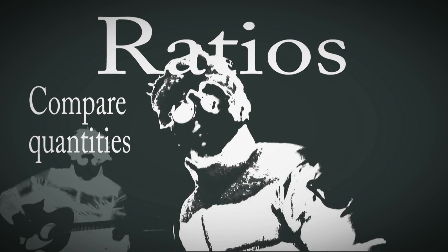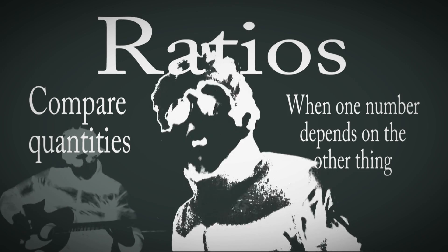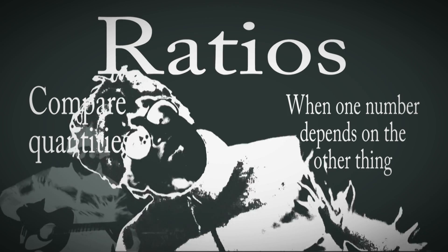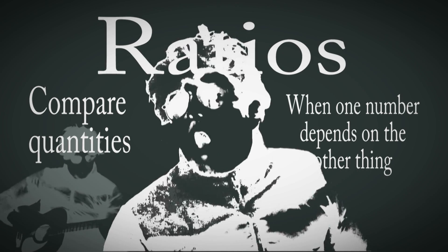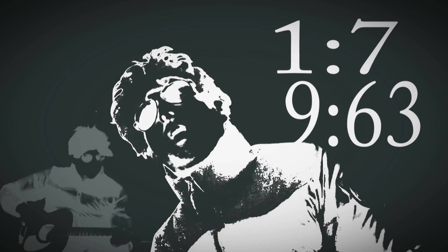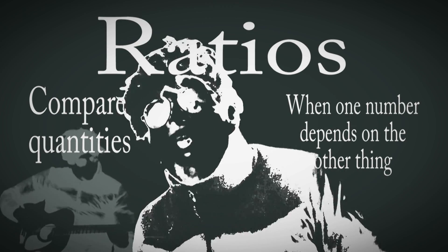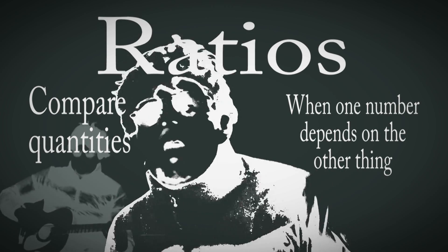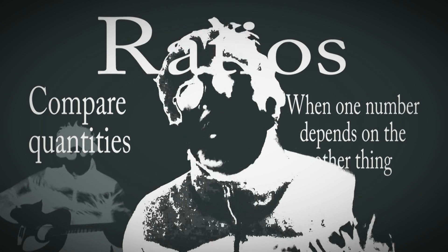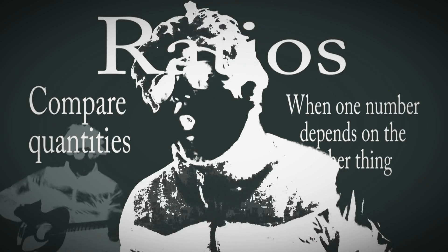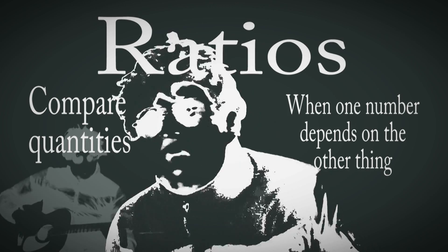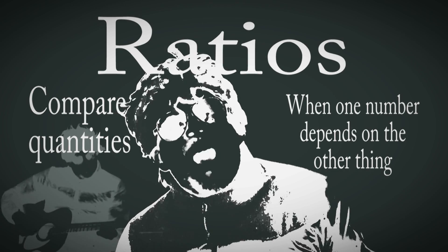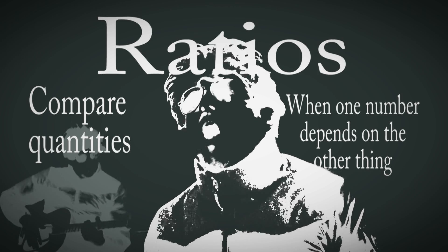Compare quantities when one number depends on the other thing. Ratio. Compare quantities when one number depends on the other thing. If you got one of these, you got seven; if you got nine, you got sixty-three. Ratios compare quantities when one number depends on the other thing. If I've got this much of this thing, I've got that much of that.